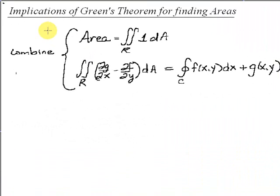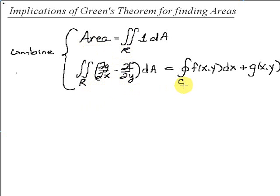In this segment, we're going to discuss the implications of Green's theorem for finding areas. In other words, we want to combine what we know about double integrals over region R and how to find an area using them with the relationship that Green's theorem gives us between the double integral over R and the line integral, so that we can use line integrals to find area.